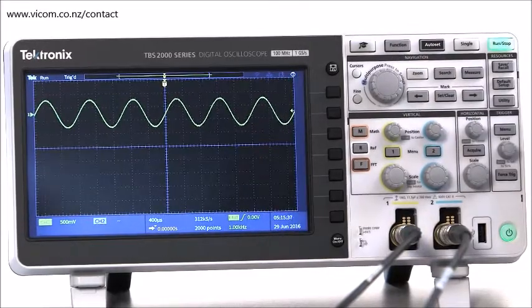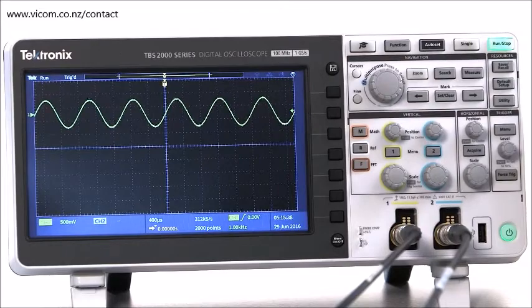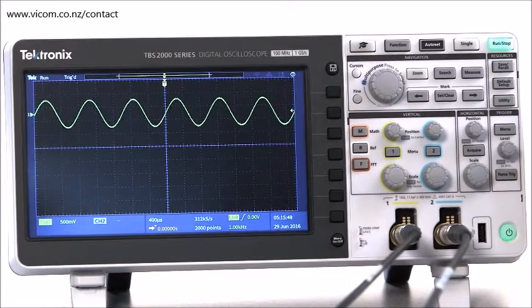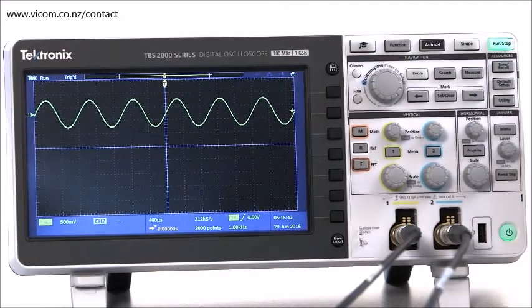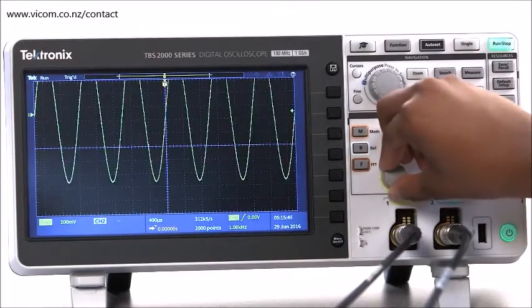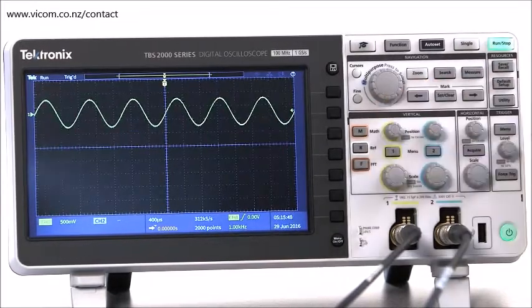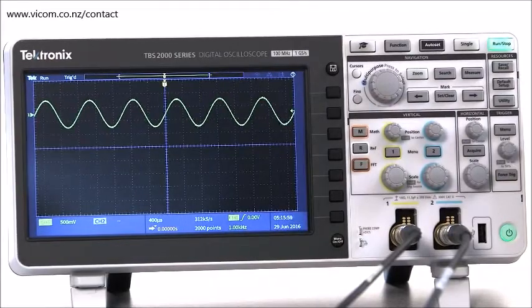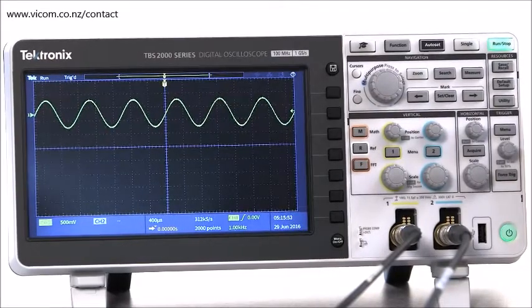The vertical controls configure the y-axis of the display, which is usually, but not always, represented in volts. The vertical scale appears to make waveforms taller or shorter, but in actuality, it determines how many volts are in each vertical division of the screen.